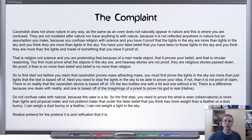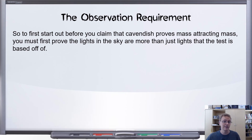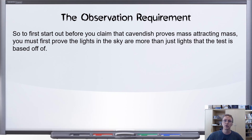Let's get into this complaint piece by piece. The first complaint I've identified as the observation requirement. Let's read a section from the comment: 'So to first start out, before you claim that Cavendish proves mass attracting mass, you must first prove the lights in the sky are more than just lights that the test is based off of.' We need a little background. We are talking about the Cavendish experiment.